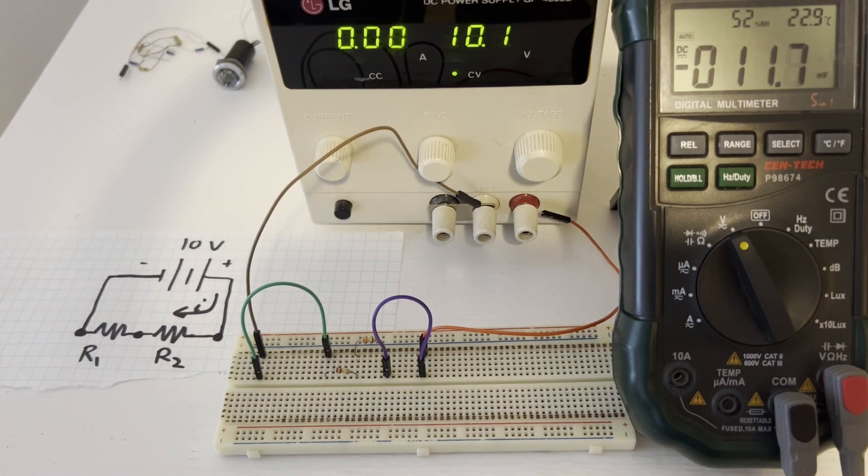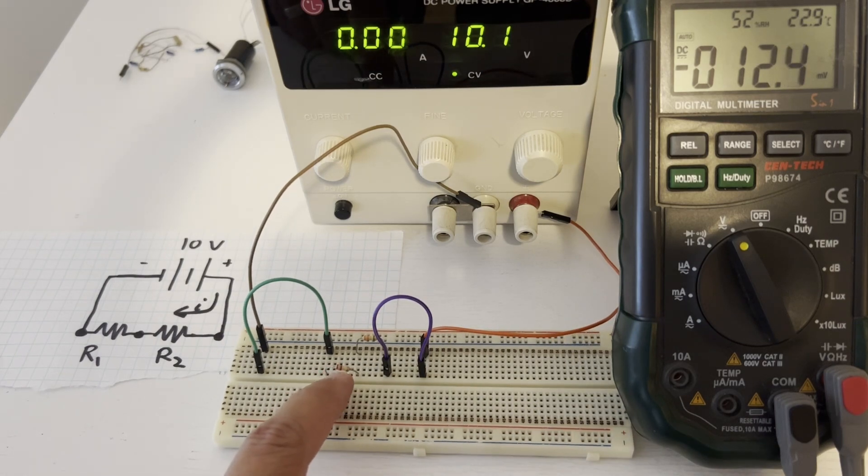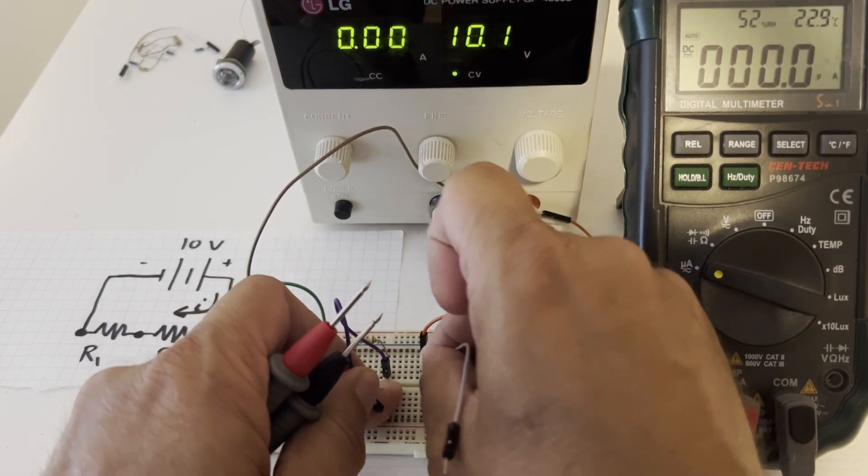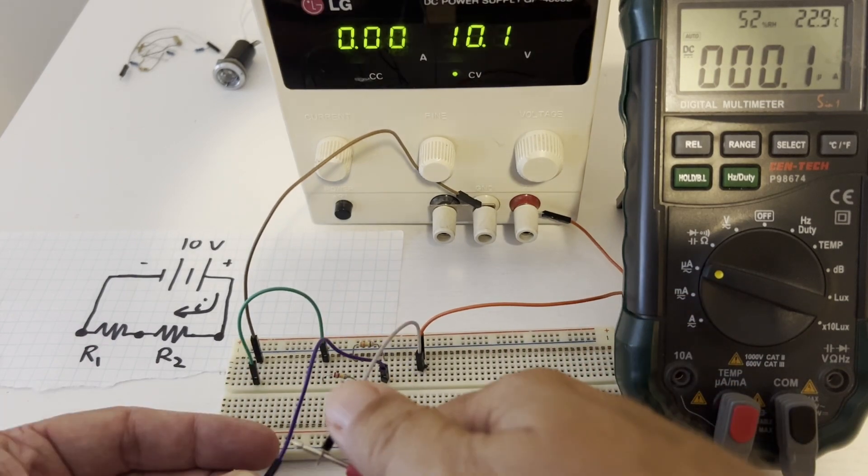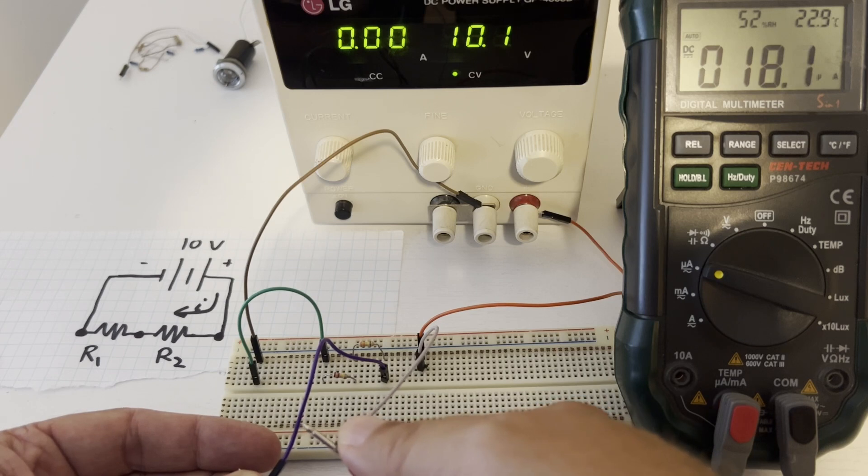Kirchhoff's voltage law is the sum of the voltage potential differences in any loop must be zero. Next, we'll measure the current that's flowing through the circuit. And again, because I'm holding the wires, it may be off slightly. But we're seeing about 18.1 microamps.